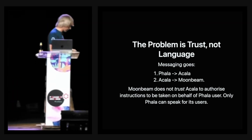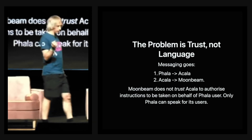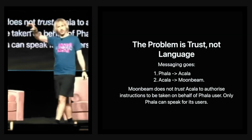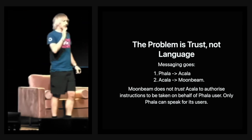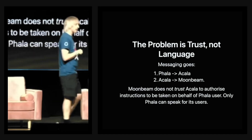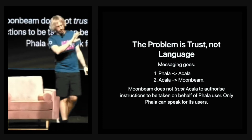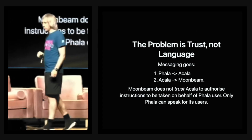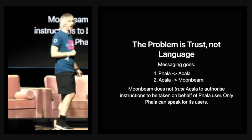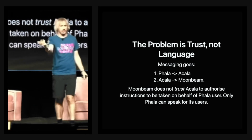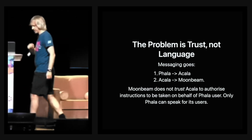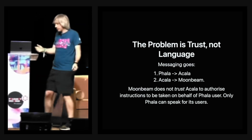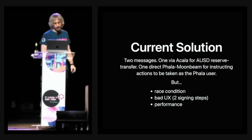XCM cannot solve this — it's not a language issue, it's a trust relationship issue. The first message has Falla asking Acala to transfer the aUSD over to Moonbeam. The second message must be from Acala to Moonbeam, since Acala is the only one Moonbeam can trust to confirm receipt of aUSD. But then for contract execution on Moonbeam on behalf of the Falla user, Moonbeam doesn't trust Acala to tell it what to do on behalf of Falla's user — there must be a third, direct message from Falla to Moonbeam, which is why it has to be two steps.